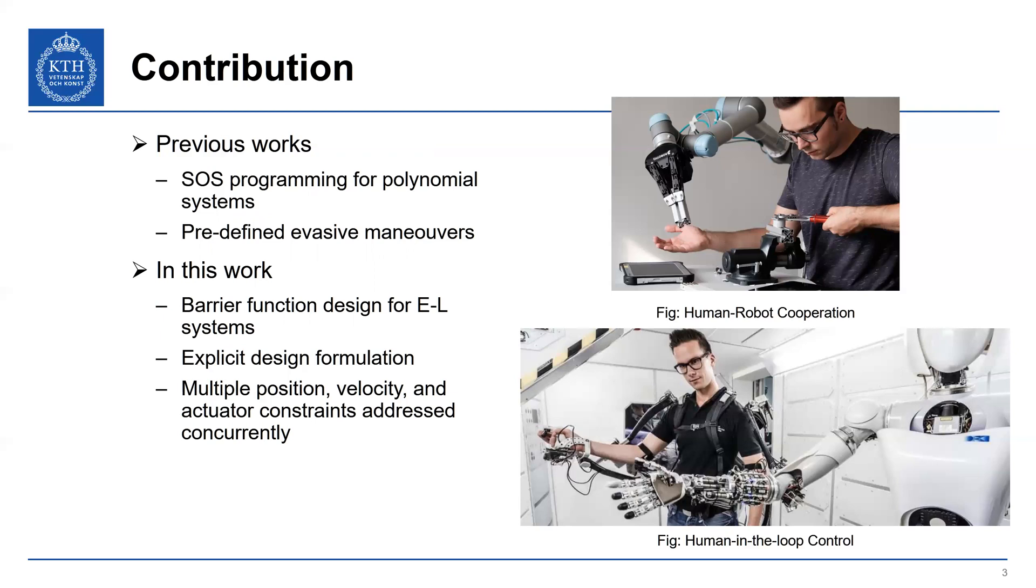So in this work, we're going to look at the design of control barrier functions for Euler-Lagrange systems. But we have an explicit design formulation that's not dependent on the existence of some other function. And we'll look at multiple position, velocity and actuator constraints that must be satisfied simultaneously.